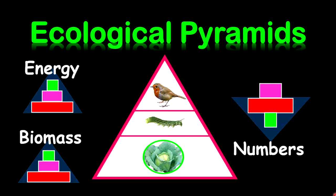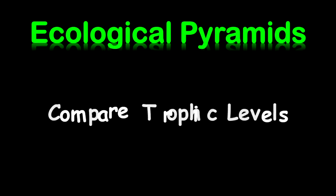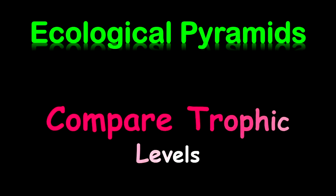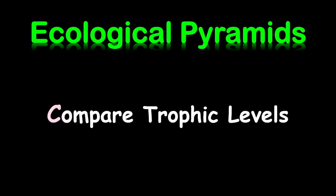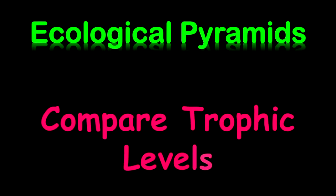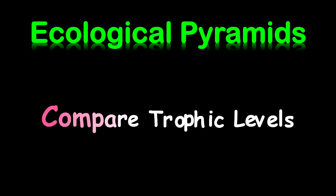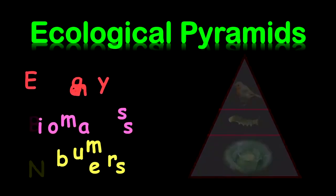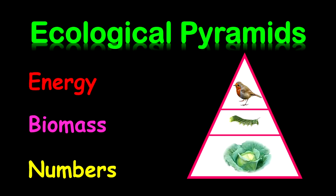Once you talk about ecological pyramids, you're ultimately talking about a comparison between trophic levels within an ecosystem. Ecological pyramids are used to compare quantifiable biological variables between trophic levels in an ecosystem. These variables that we're going to focus on today will include energy, biomass, and numbers.